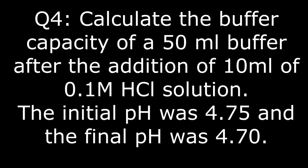The last question: calculate the buffer capacity of a 50 mL buffer solution after the addition of 10 mL of a 0.1 mol/L solution of HCl. The initial pH was 4.75 and the final pH is 4.707.